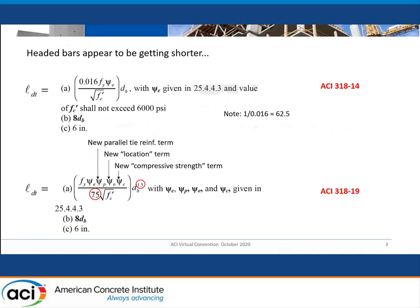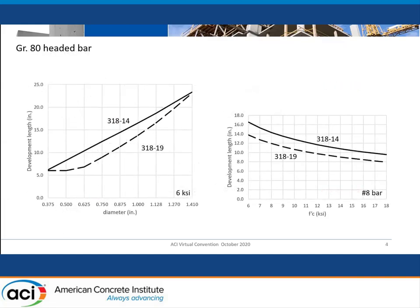If you look at the current provisions for headed bars, I think they're getting shorter headed bars. The constant in the equation in 318-14 was 0.016 — flip it over, that's 62.5. That number is now 75, so L_DT got less. There is a 1.5 exponent now on the diameter term, but for bar diameters less than an inch — anyway, if you work it out, it looked to me like headed bars are getting shorter.